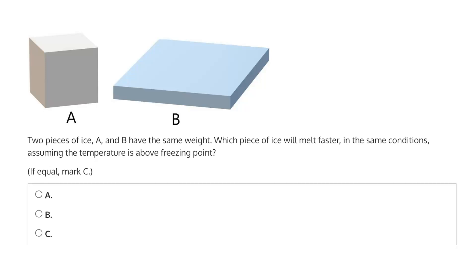This question says two pieces of ice, A and B, have the same weight. Which piece of ice will melt faster in the same conditions, assuming the temperature is above freezing?